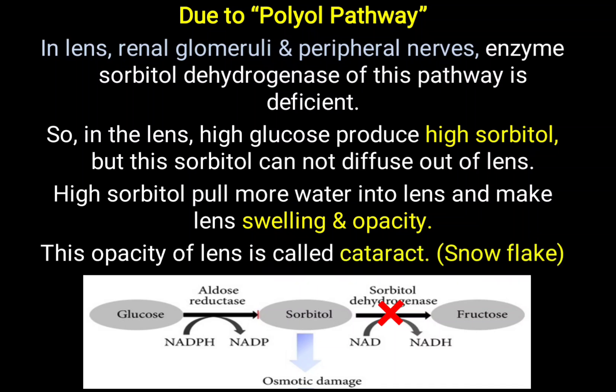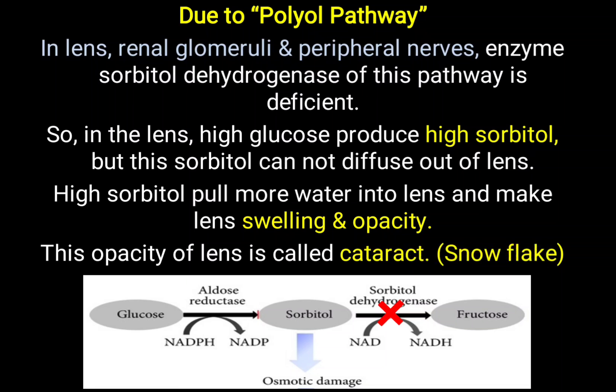This opacity of the lens is considered cataract. When cataract is related to diabetes mellitus, you have to remember it is called snowflake-like cataract or bread crumb-like cataract. Oil drop cataract is associated with galactosemia, where cataract is also seen. So snowflake or bread crumb-like cataract is specific to diabetes mellitus, while oil drop cataract is for galactosemia.